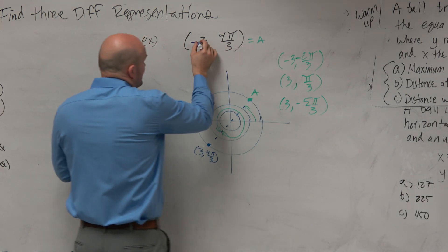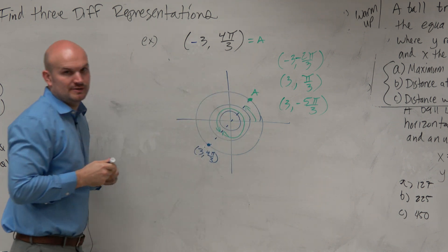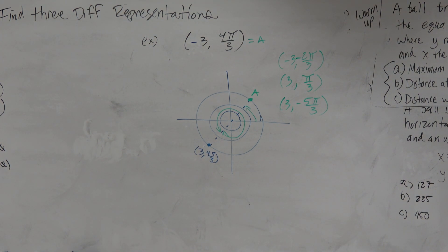But there is a negative there, so you go to the angle, but the negative reflects it about the origin. Yes? So where did you get the 2π? Thank you, thank you.